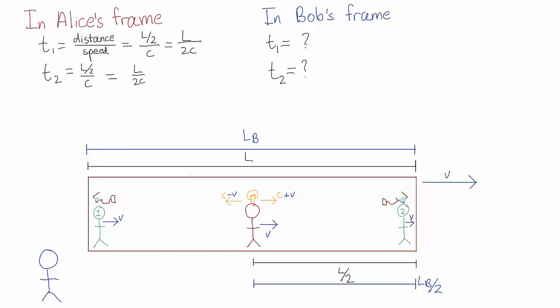Okay, so the second postulate of relativity tells us that the speed of light is the same in all inertial reference frames. So even though Alice is moving at speed v, Bob measures the photons at traveling at c, the speed of light.